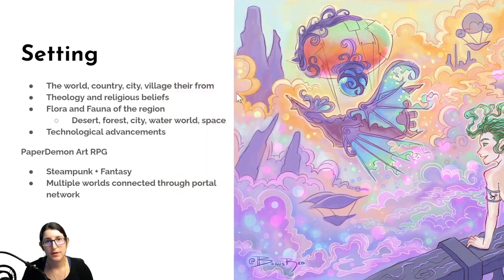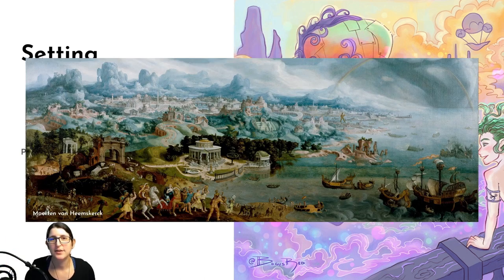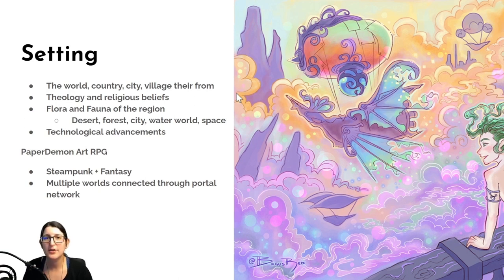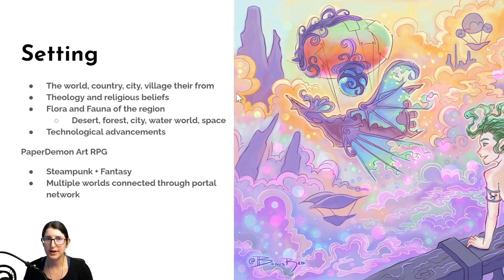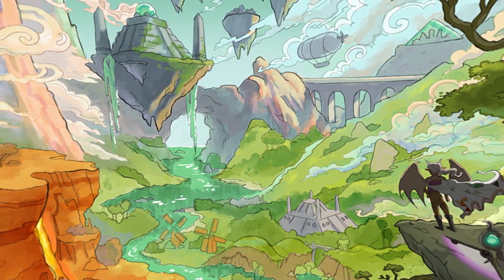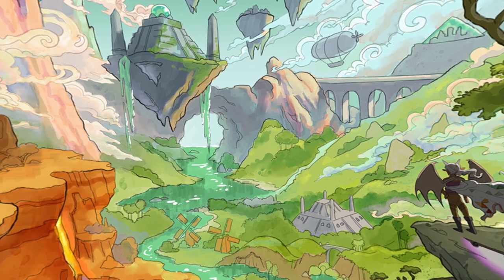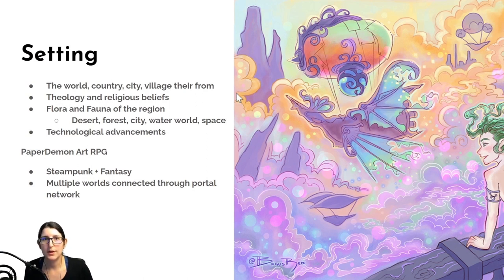Also consider the technological advancement of this world - is it far into the future with a lot of technology, or way in the past with none? If you're creating a character for the Paper Demon Art RPG, our setting is more of a steampunk fantasy kind of vibe, so you can use that as inspiration. Additionally, we have multiple worlds called portals in the Paper Demon universe, and this portal network connects different worlds with different flora, fauna, and creatures. Those can be sources of inspiration for your characters as well.